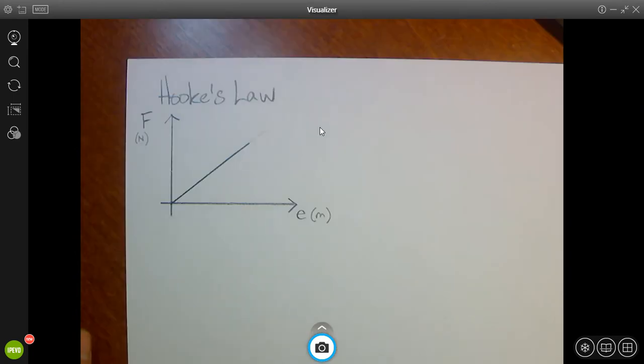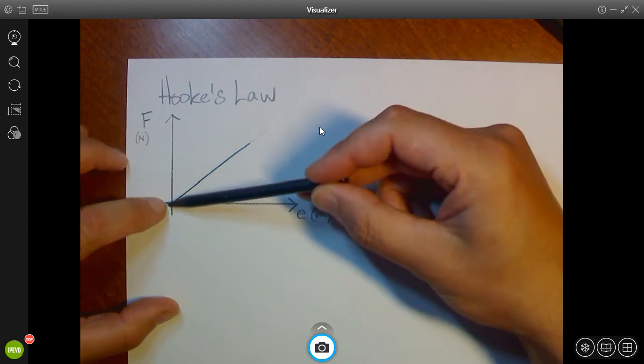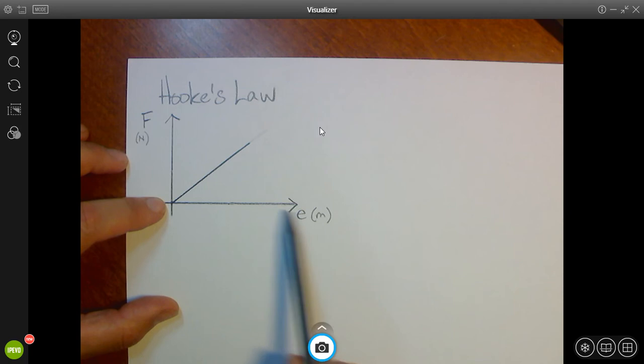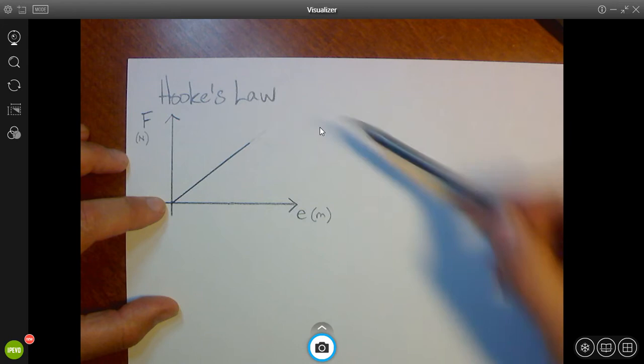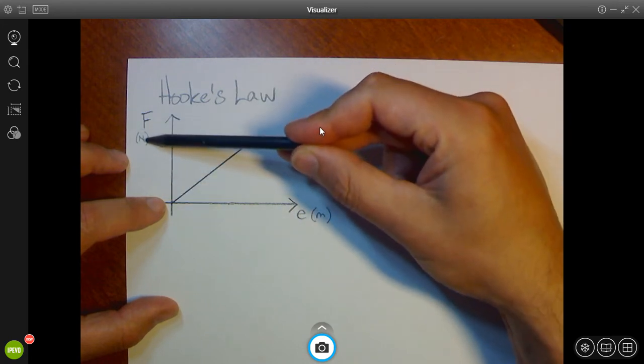So the graph looks something like this, where on the x-axis we've got the extension plotted, and we've used the units meters.